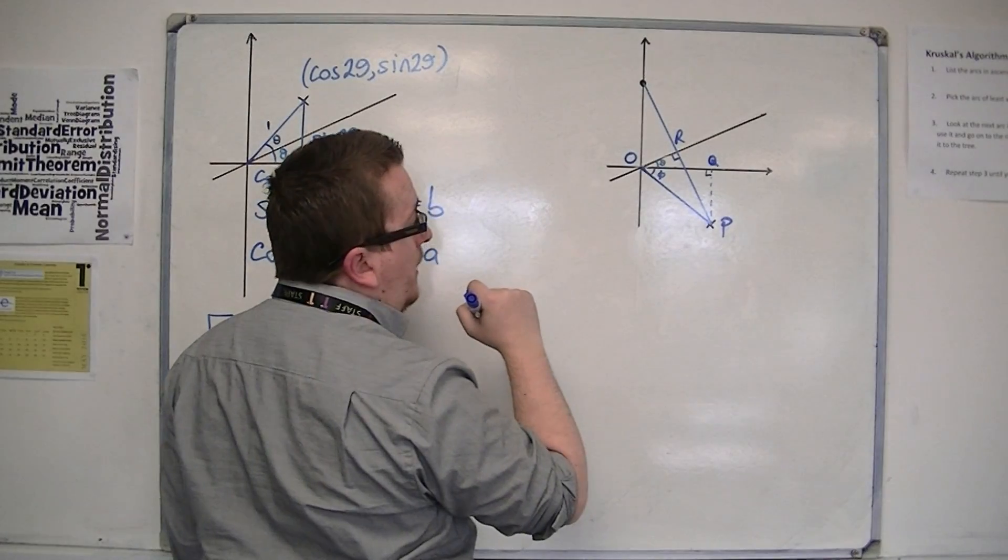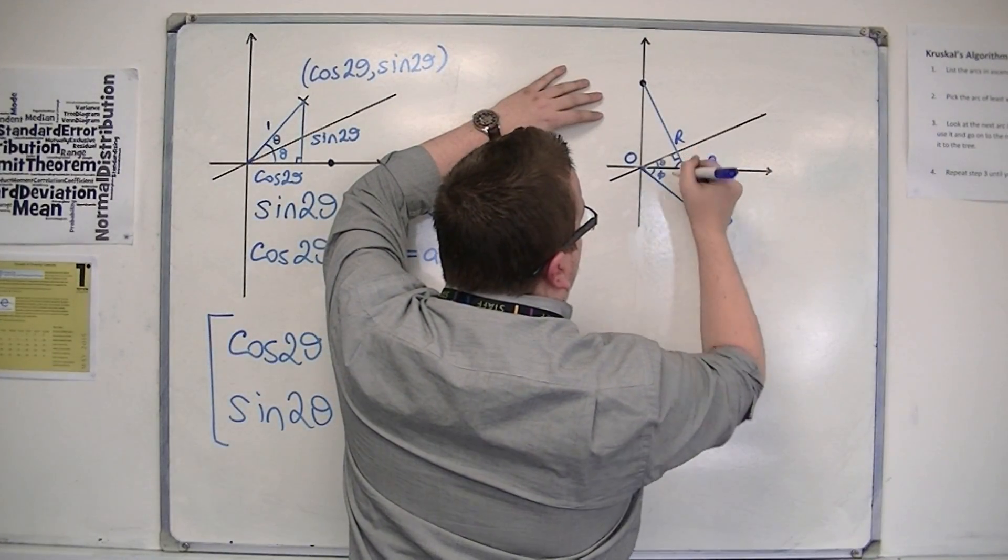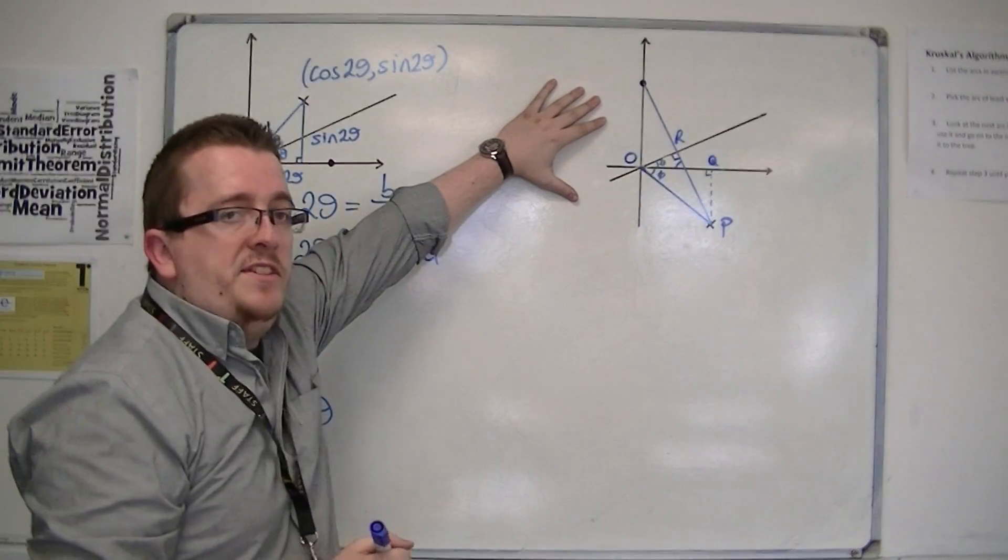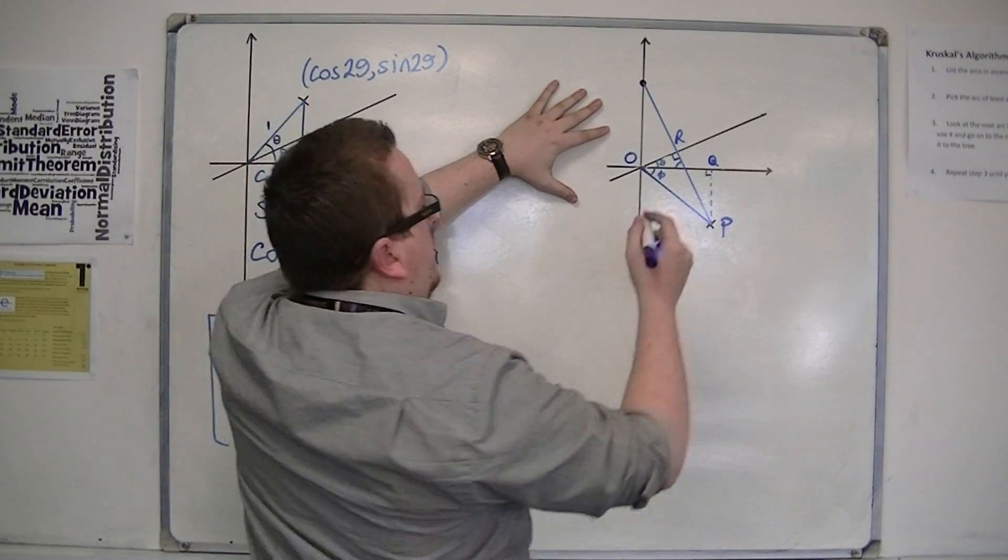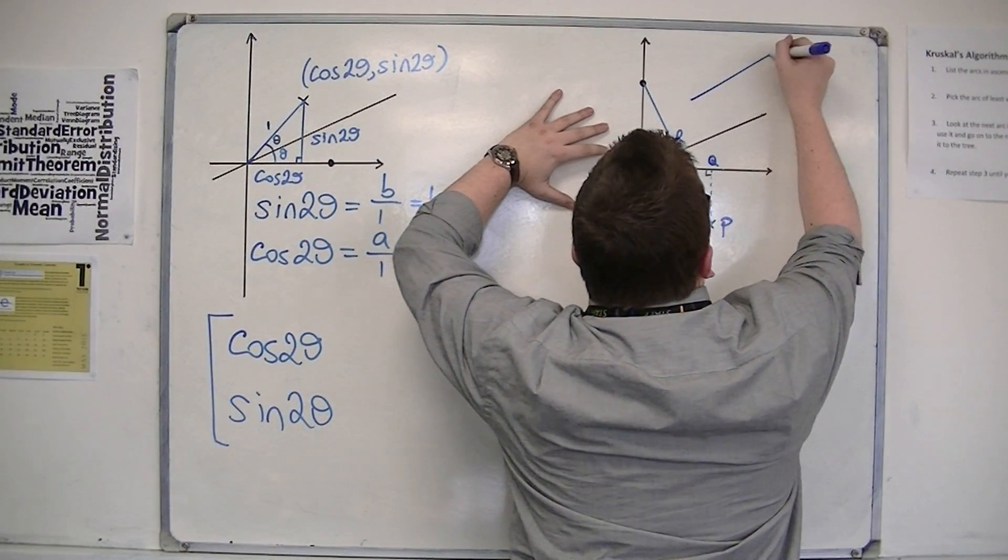So what I currently have is a right-angled triangle there, and I can then say, well, this angle is going to be 90 minus theta. So this right-angled triangle is quite small, so I'm going to redraw it here.